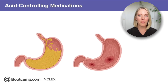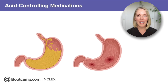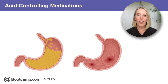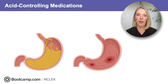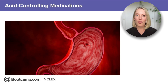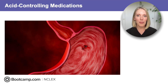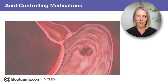Excess acid can also cause peptic ulcer disease. This happens when the mucosal lining of the stomach is damaged or thin, like in clients who are taking long-term NSAID therapy. The gastric acid starts to eat away at the stomach lining itself, causing ulcers. If nothing is done, these ulcers will get worse and start to bleed, and can even go through the entire depth of the stomach, causing stomach perforation.